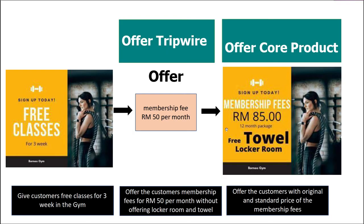For example, you give customers free gym classes for three weeks. After that, you offer them a tripwire — a membership fee of 50 ringgit per month, but without access to a locker room or towel, so they cannot shower there. After training for three to five months, you then offer them the core product: a 12-month membership package for 85 ringgit per month, which includes a towel and locker room access so they can shower at the gym.